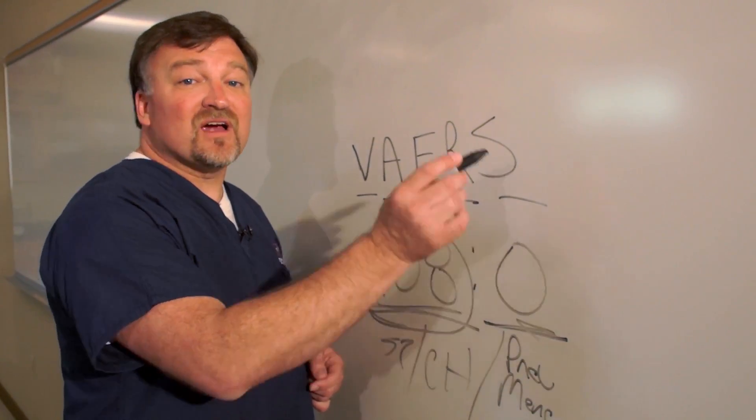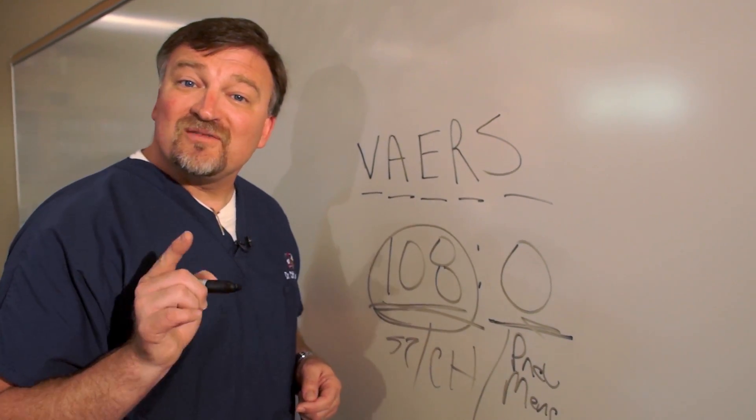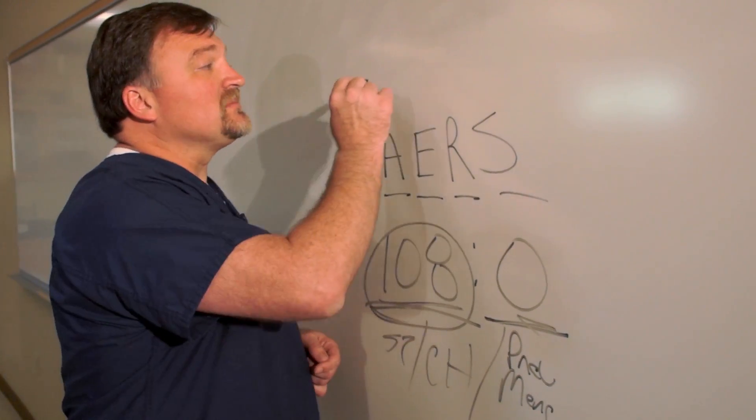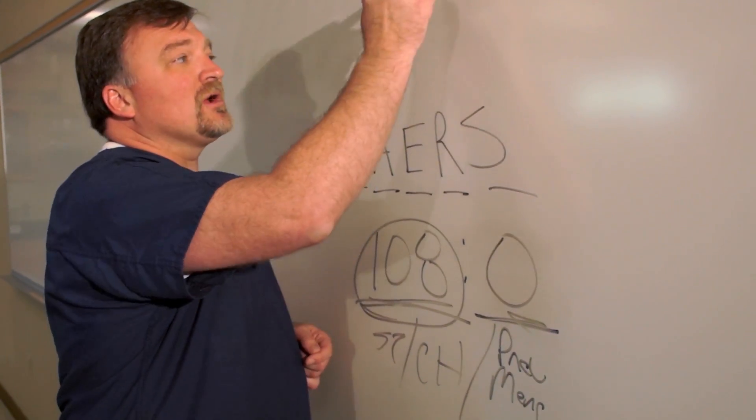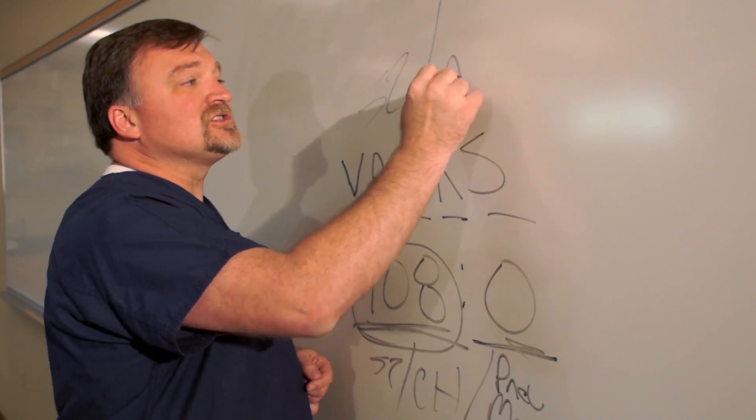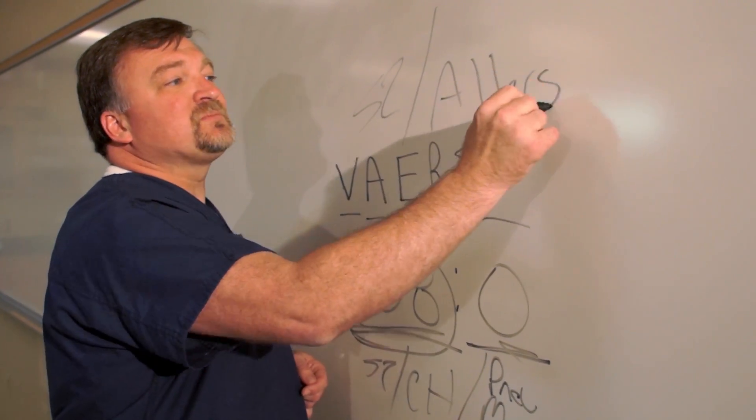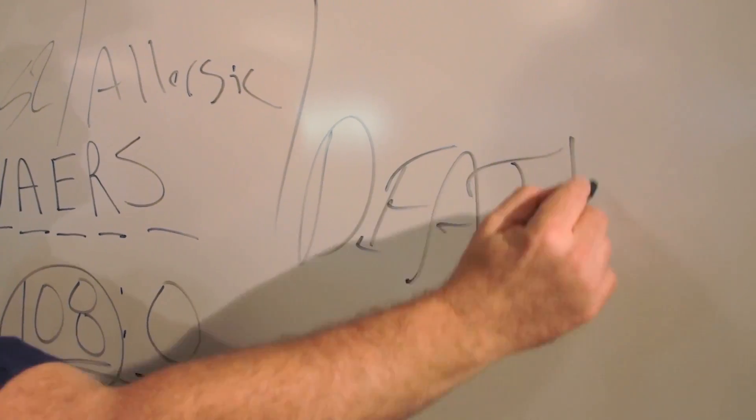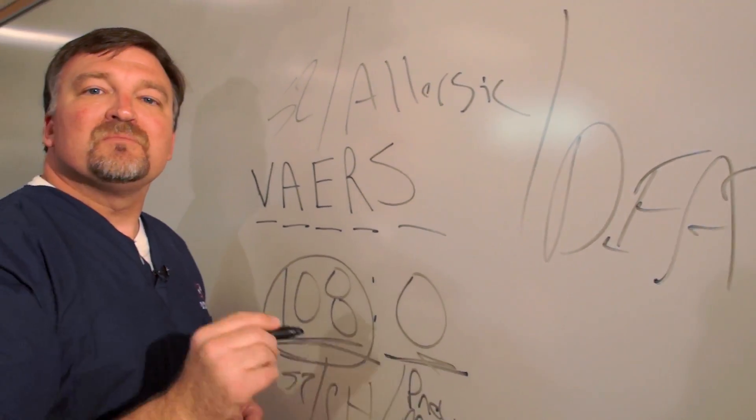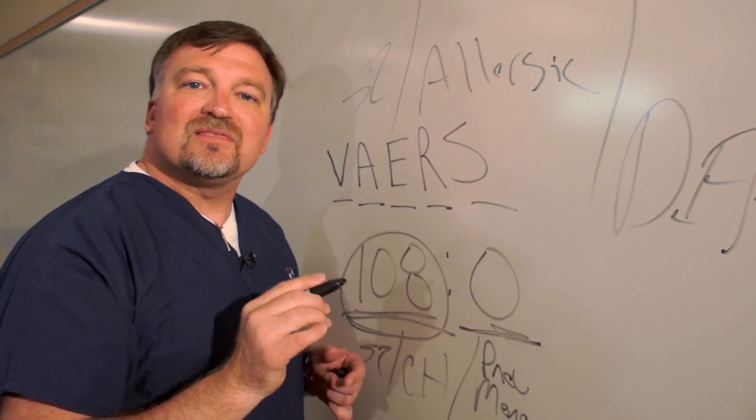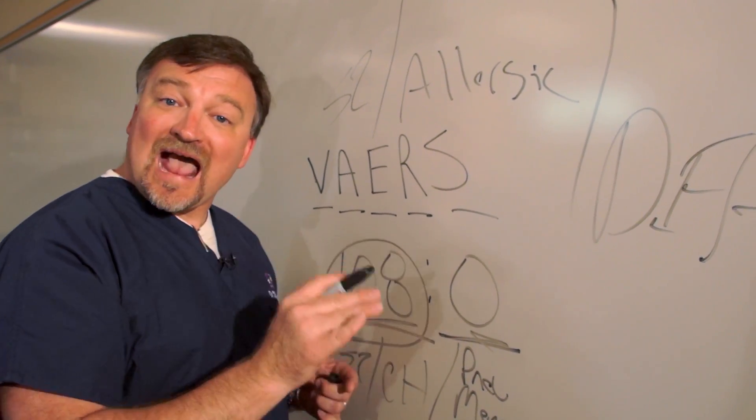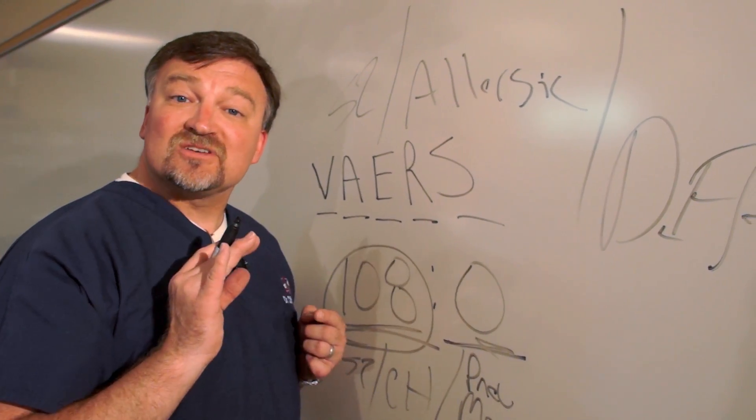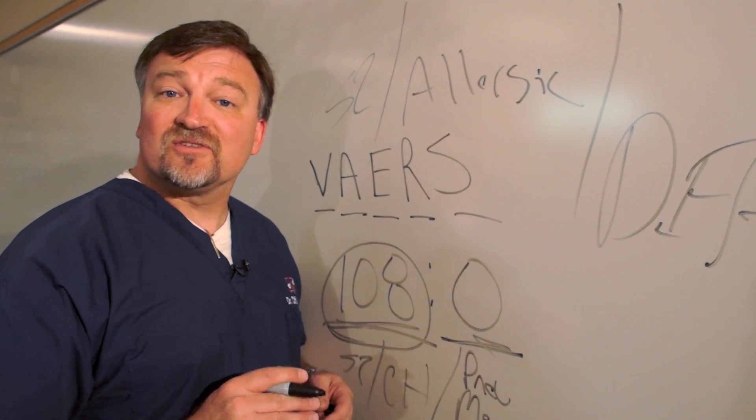Now, this system is very, very important. And if you ever do have a severe adverse effect from a vaccine, something like a seizure, or if you have a severe allergic reaction, and especially if you ever have a death that follows the vaccine, definitely report it. Because this is the only way that we have of looking at vaccines, adverse effects, and making sure that our vaccines are safe and effective for children.